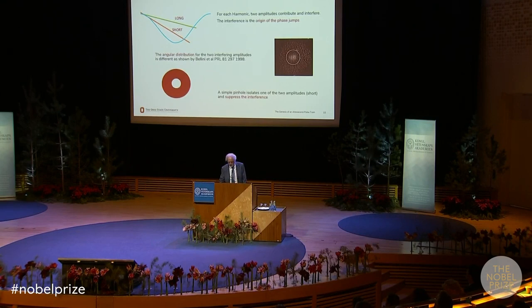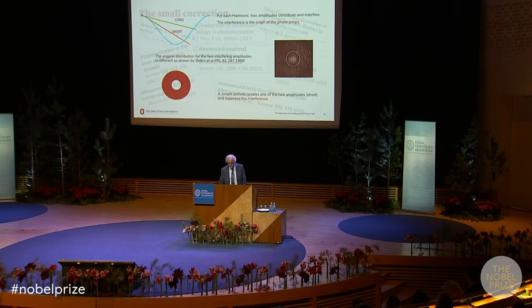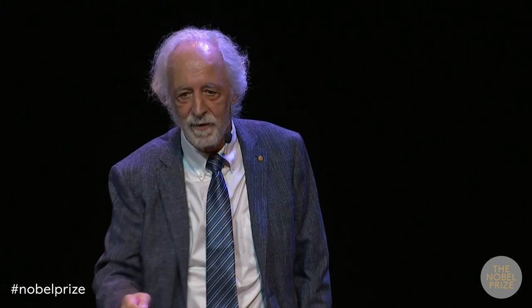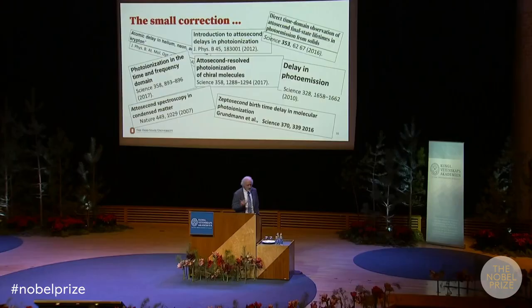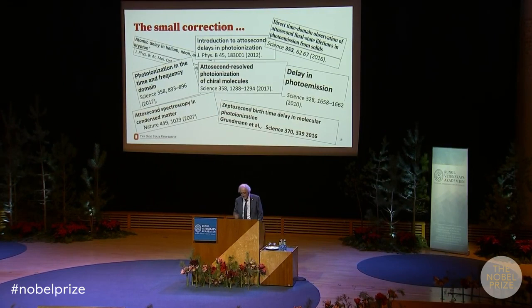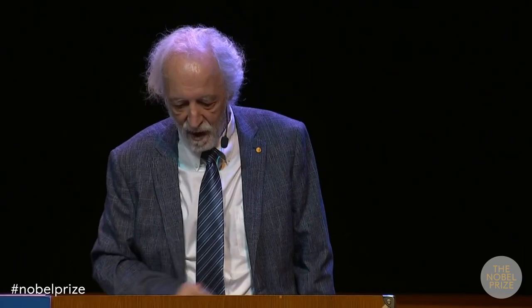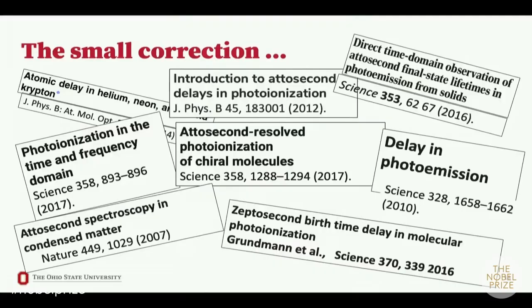One word about the small correction term. You may recall there are two terms: the harmonic phase difference and a small correction. That small correction has had a remarkable career in the past ten years under the name of 'photoionization delay' — the technique used to measure the time delay for electrons to be removed in the photoionization process. And in the most recent work, zeptosecond timescales are already appearing, so the future is coming.